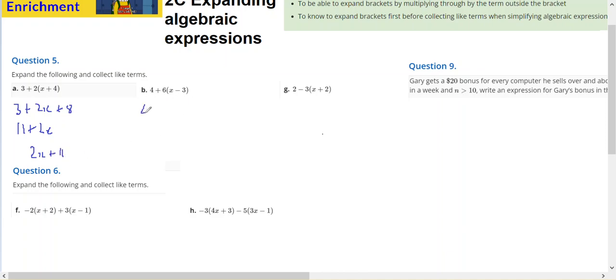In the next one, 4 plus 6 times x is 6x. 6 times negative 3 is negative 18. Combining these together, negative 14 plus 6x, or again 6x minus 14 is the same expression.